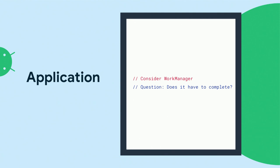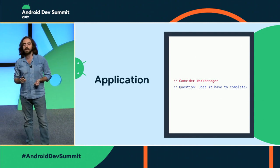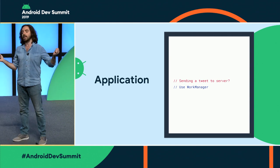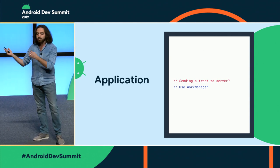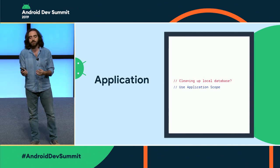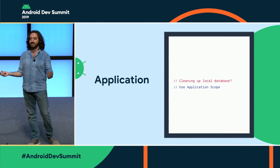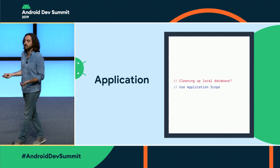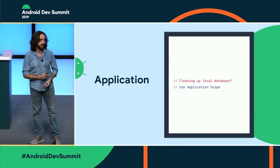The third layer is your application layer, where things get a little bit trickier. If you want to run something that's not tied to any screen, you need to figure out whether you should be using WorkManager or not. The question you ask is: does this thing have to complete? If you're writing a Twitter client and you need to send a tweet to your server, please use WorkManager. But if you're cleaning the local database, it's fine to use the application scope — if that doesn't complete, you can do it next time the application starts.